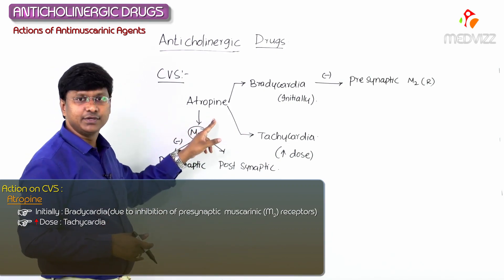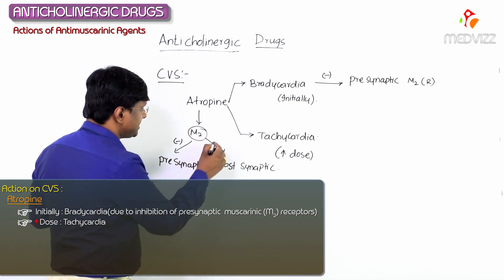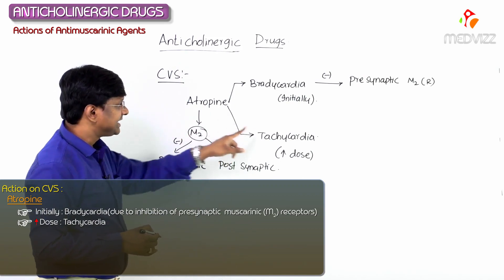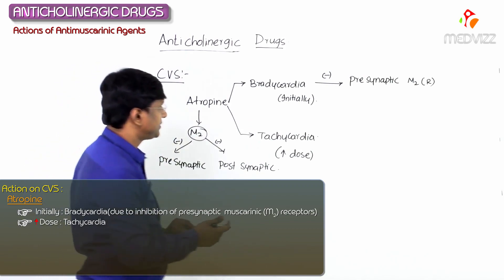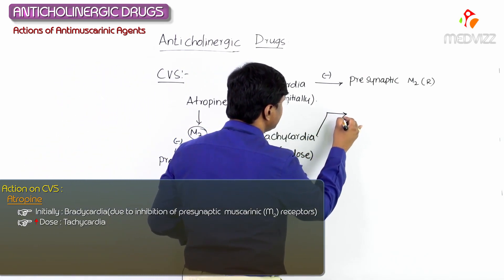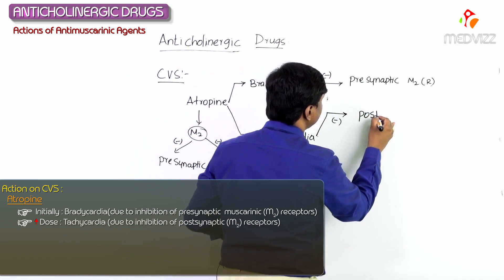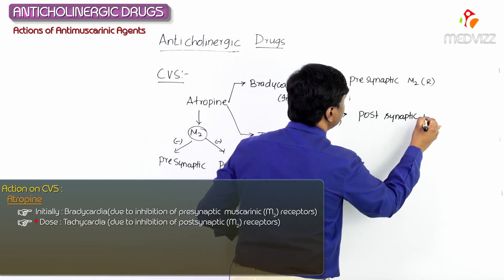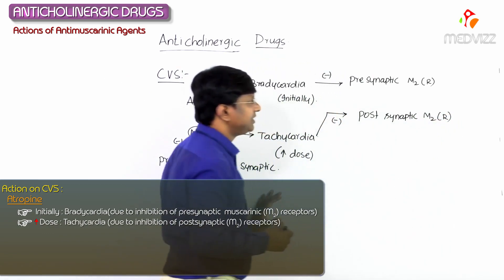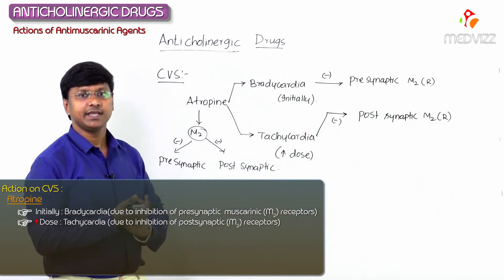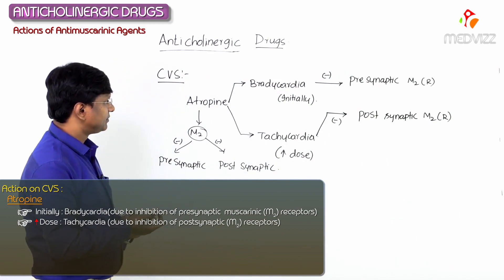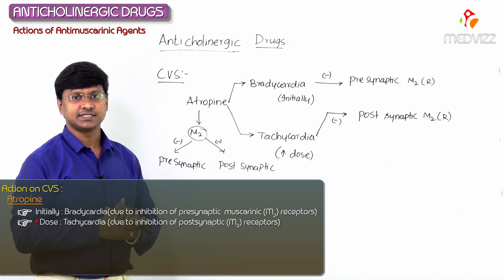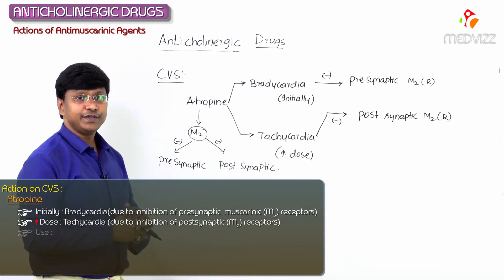Whereas when you further increase the dose, atropine will cause inhibition of the postsynaptic M2 receptors, and that will result in tachycardia. So tachycardia is due to inhibition of the postsynaptic M2 receptors.